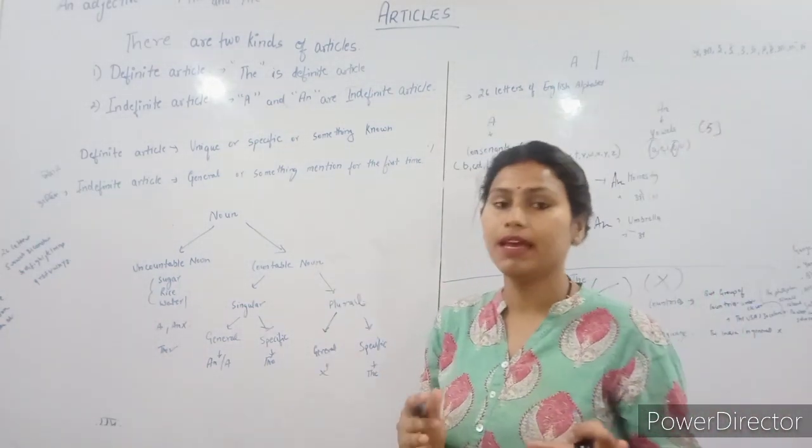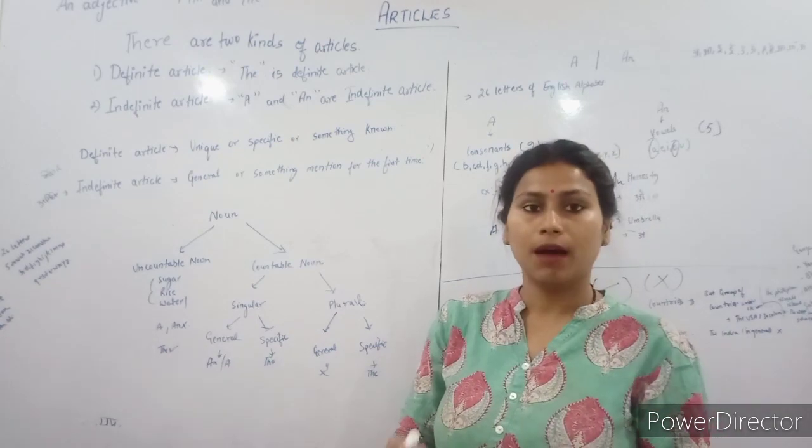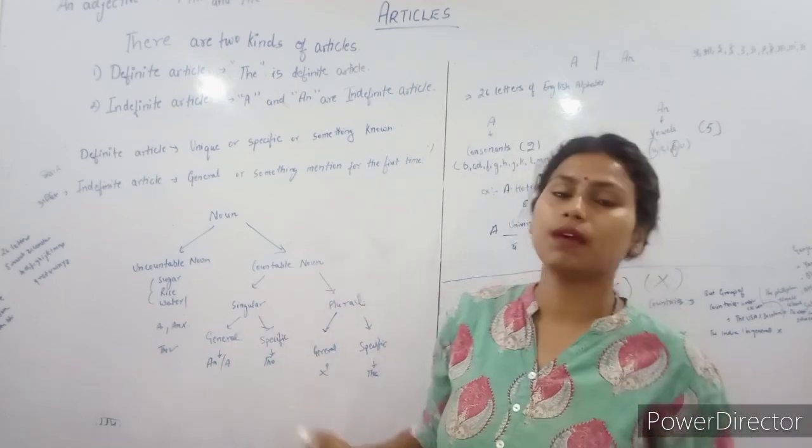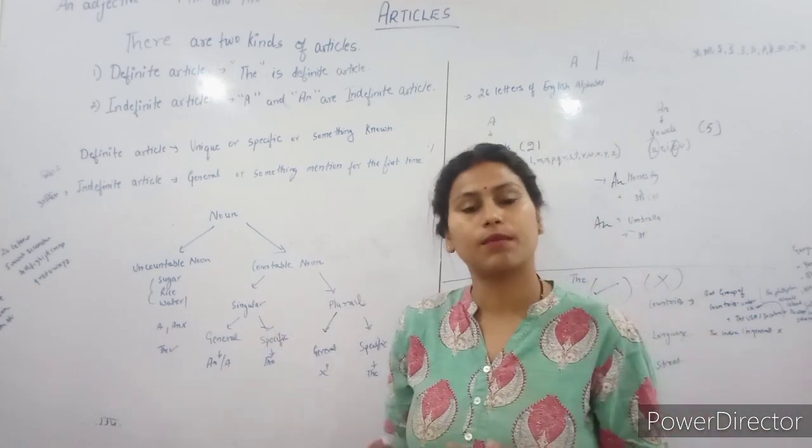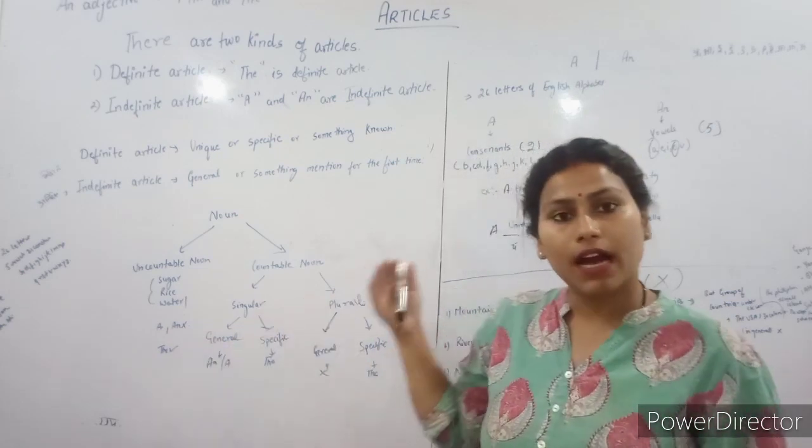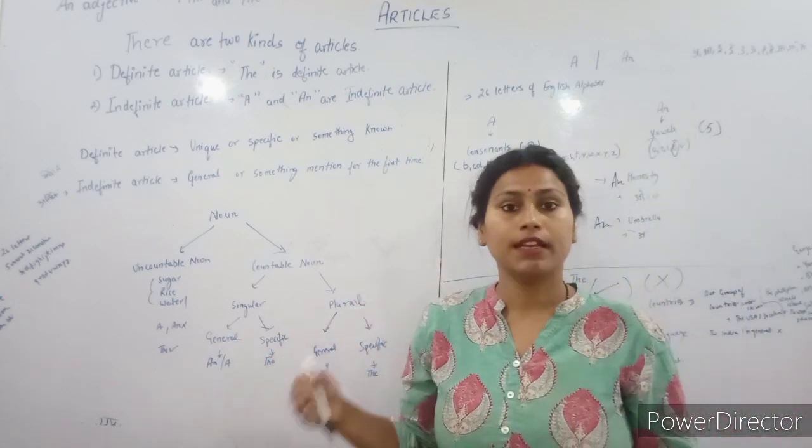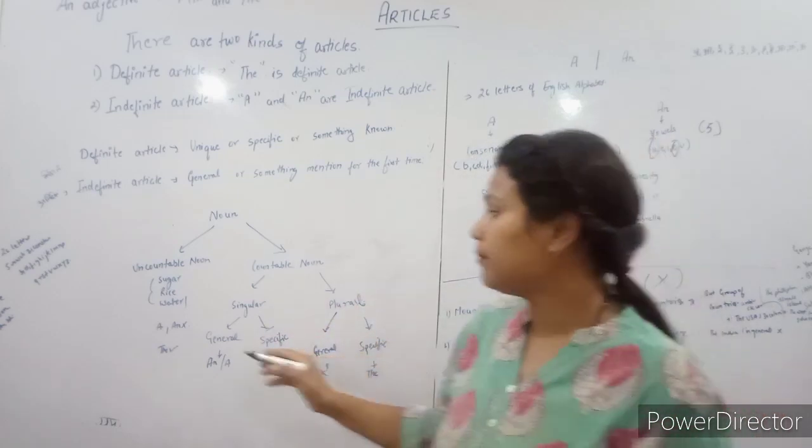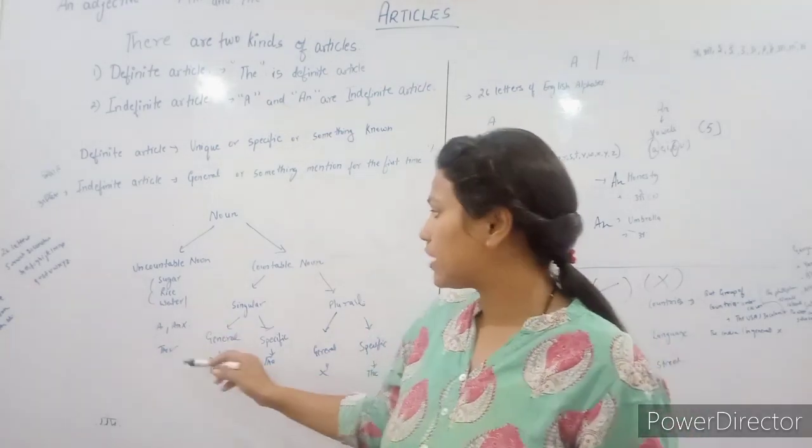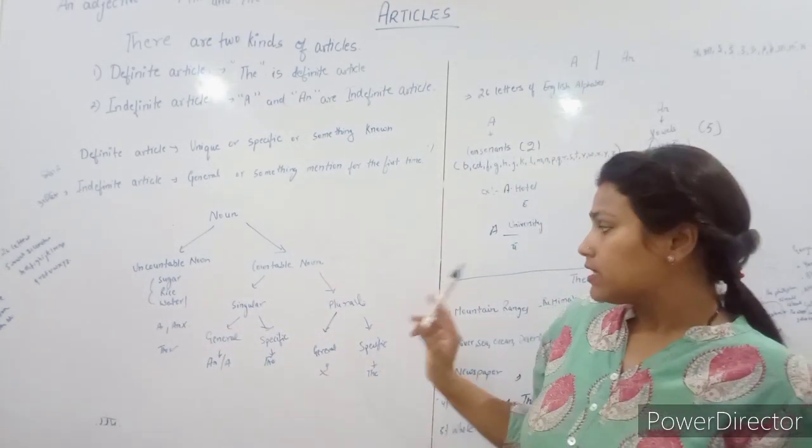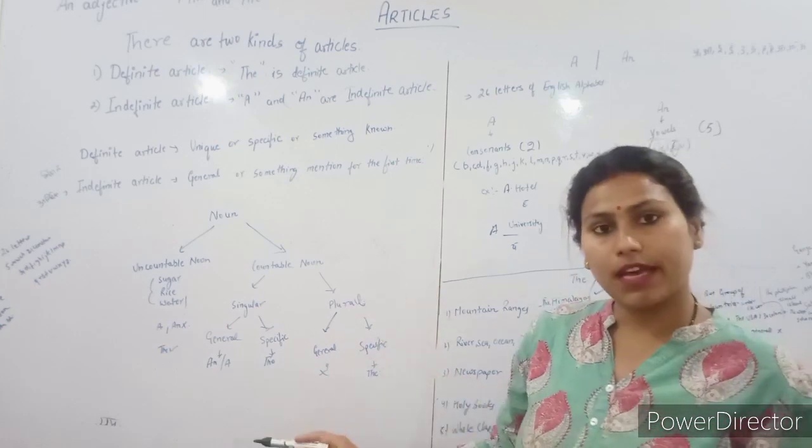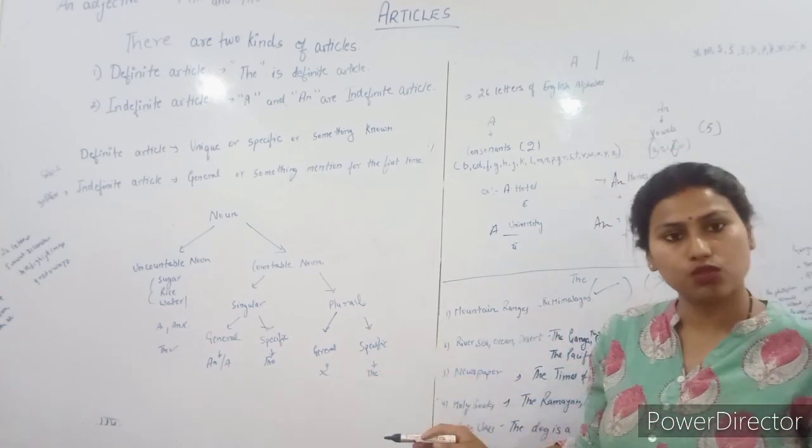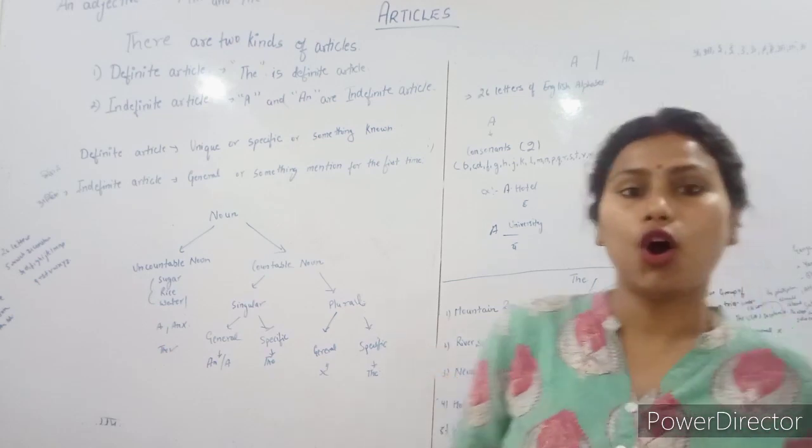So friends, today we have learned about articles. First, we need to know that there are two kinds of articles: definite articles and indefinite articles. In definite articles, we use the. In indefinite articles, we use a and an. We also need to know about nouns, which are in two parts: countable and uncountable. In uncountable, we will not use a and an. In countable, we have singular and plural. In singular, we use a and an for general, and the for specific. In plural, we don't use a and an for general, but use the for specific.